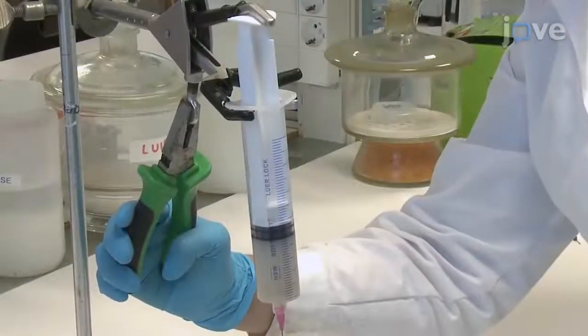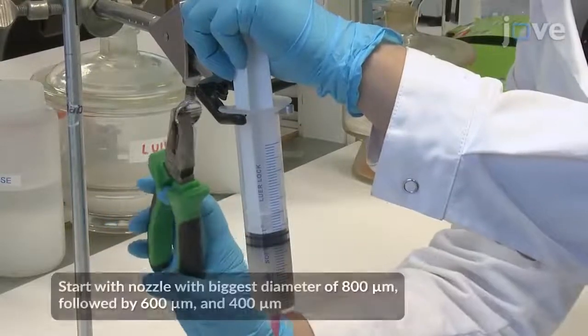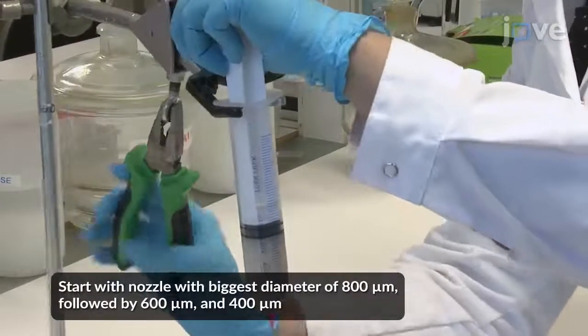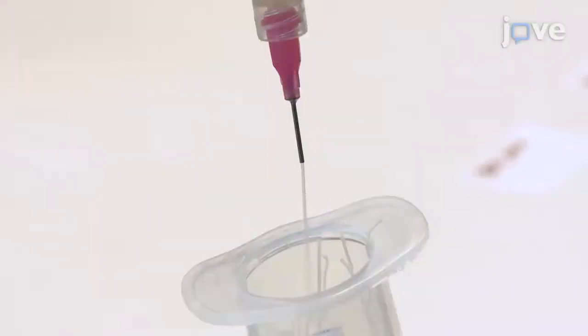Next, with the help of a mechanical clamp, pass the mixture through a series of nozzles with different diameters into another 60 mL syringe. Repeat the process until smoothly extruded filaments of hydrogel ink are obtained.